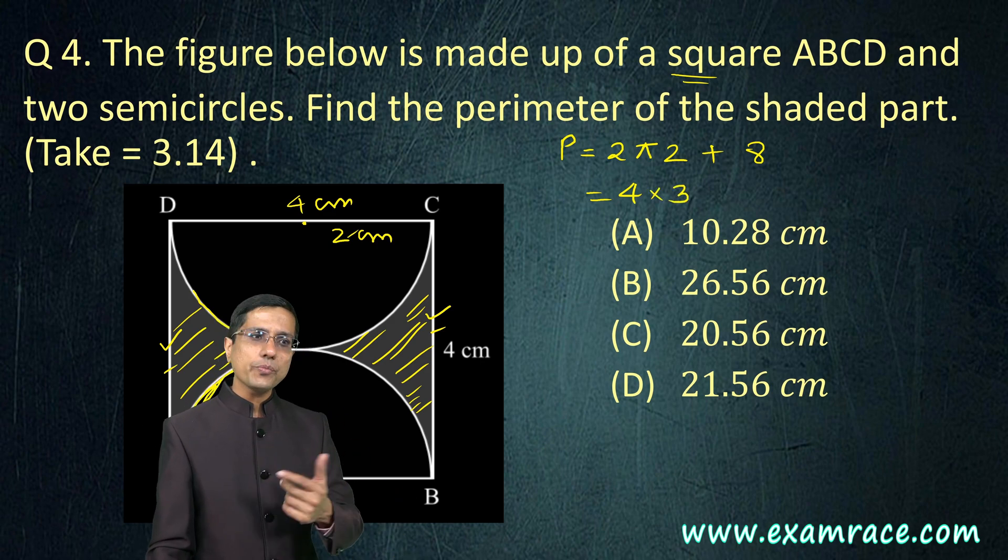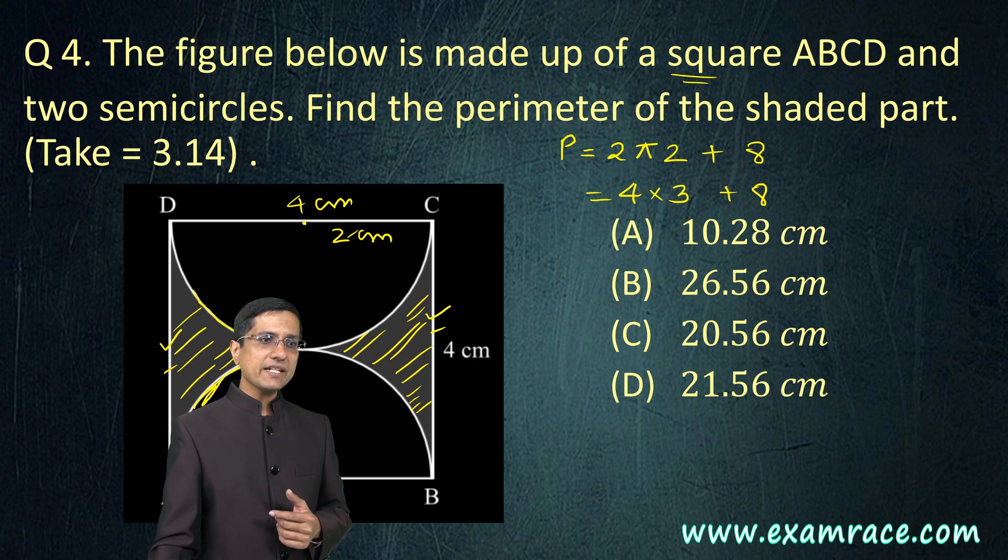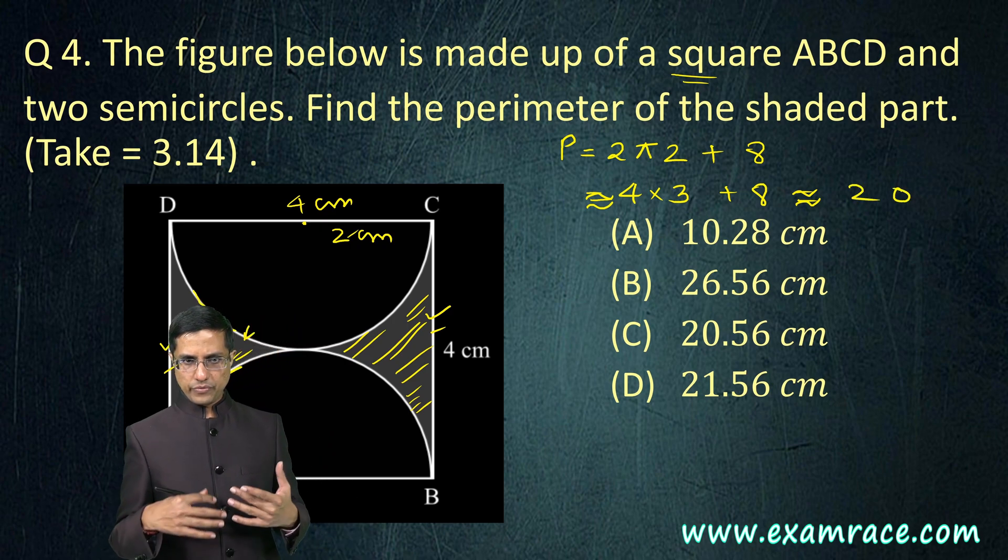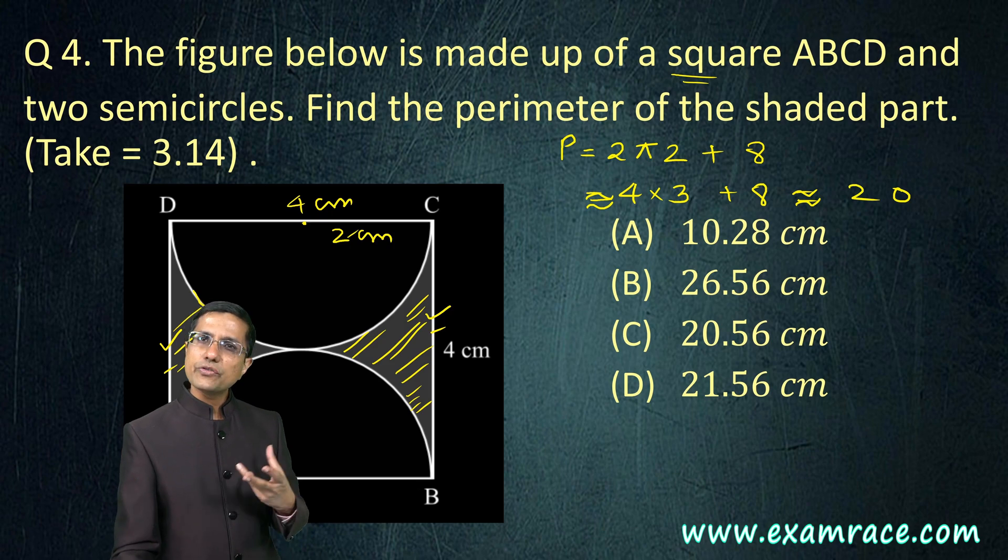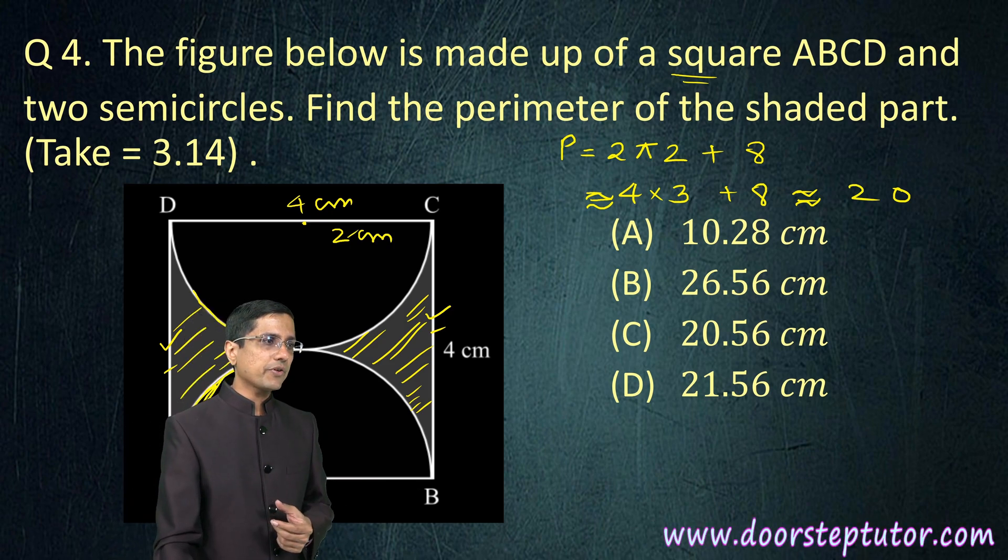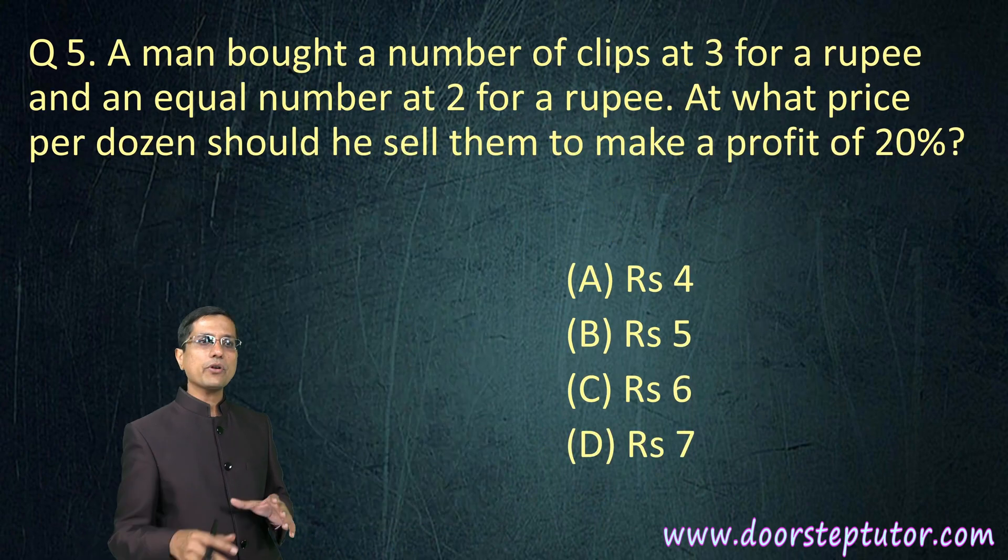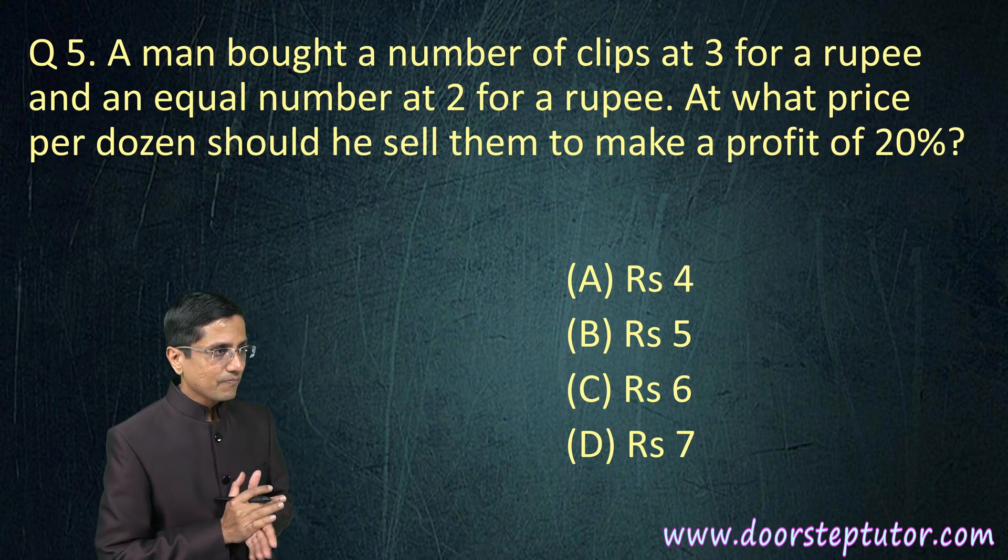This becomes 4 into pi. Pi is approximately 3.14, but let's just take it to be 3 for one second, and then 8. So this becomes approximately 12 plus 8 which is approximately 20. Very quickly using approximation we were able to come up with the right answer. It should be near 20 and little more than 20 because instead of 3.14 we took only 3. So the answer would be C, 20.56 cm.